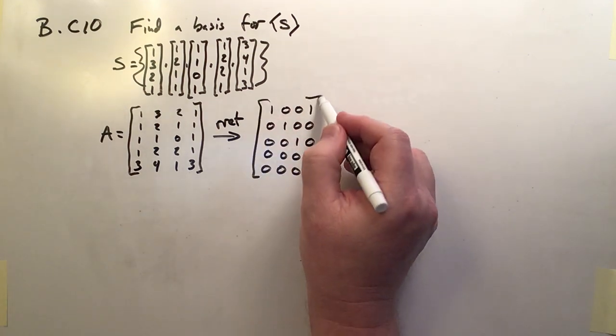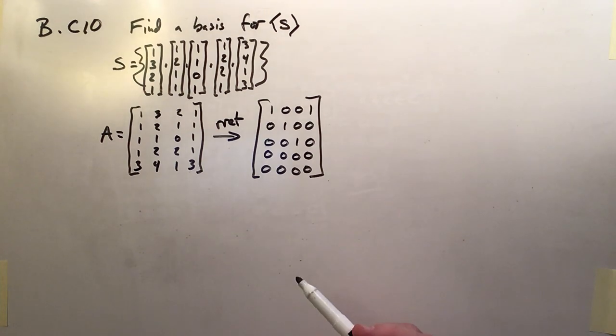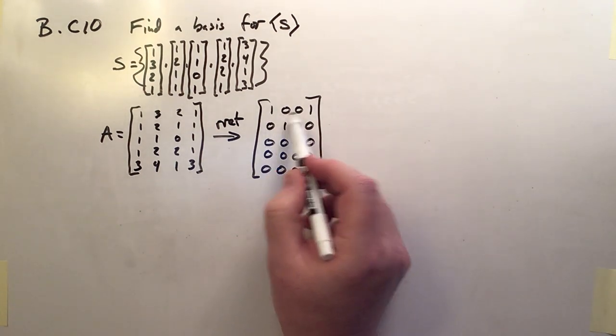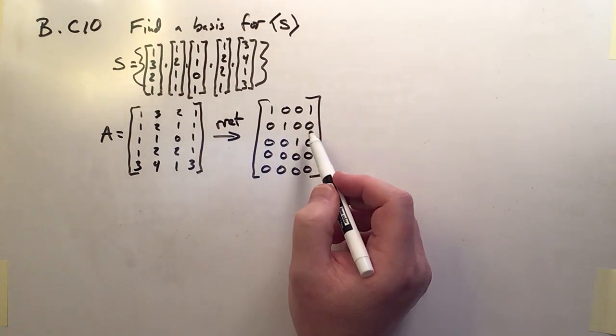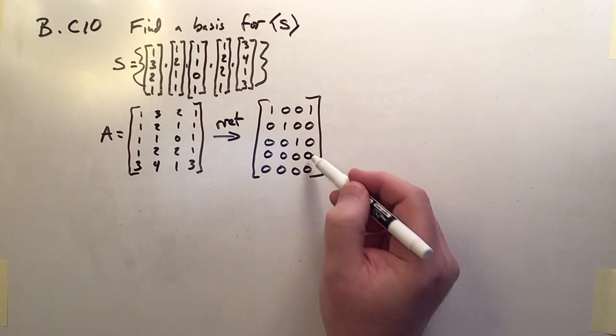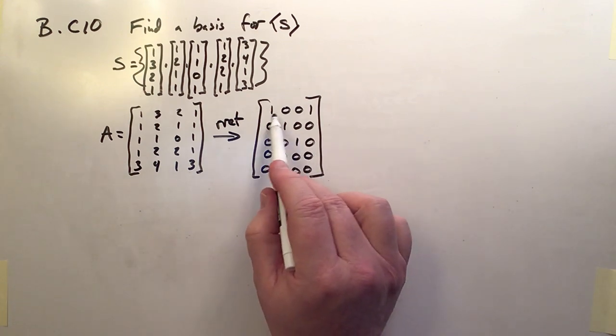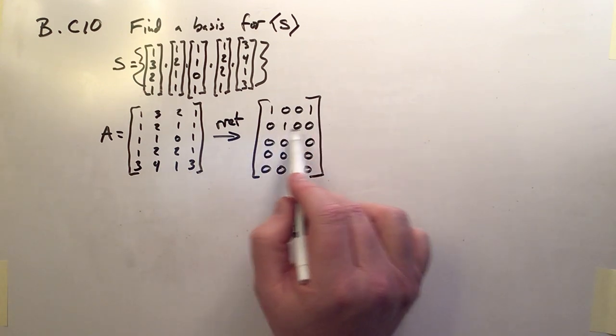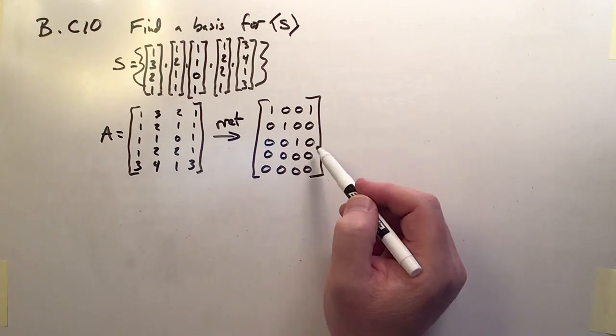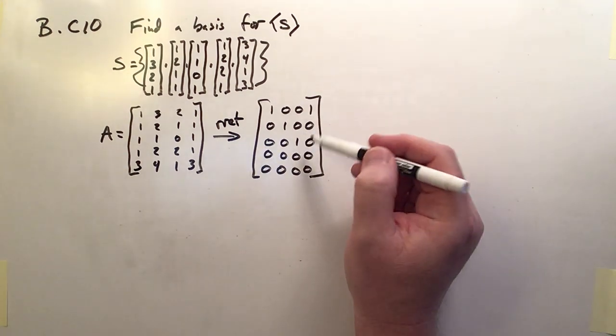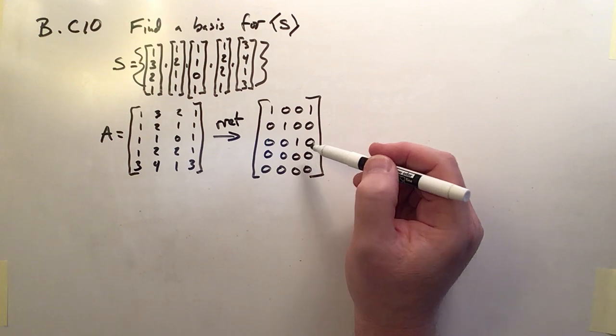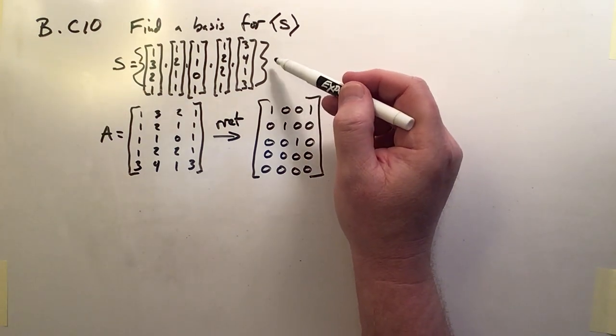And remember, the basis of the row space says that we transpose any of the rows that are non-zero. So these are both zeros. So what I want to do is transpose row 1, 2, and 3 because they're non-zero. And those will actually form the basis for this set.